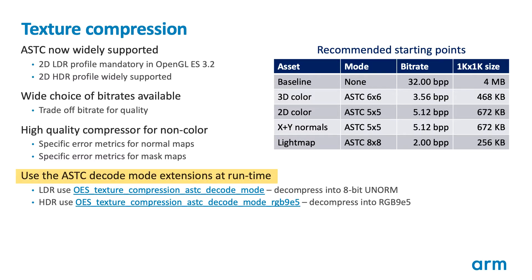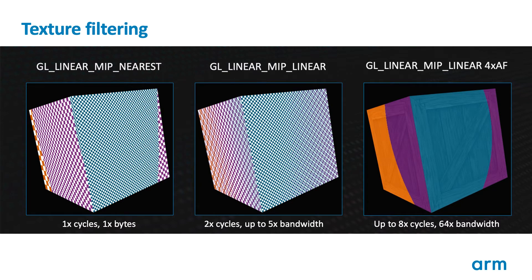To make the best use of the texture cache in the shader core, we are recommending using the decode mode extensions, where available, to reduce the decompression precision of your textures to 32 bits per pixel. By default, it's 64-bit unless using the sRGB profile, which is always 32.